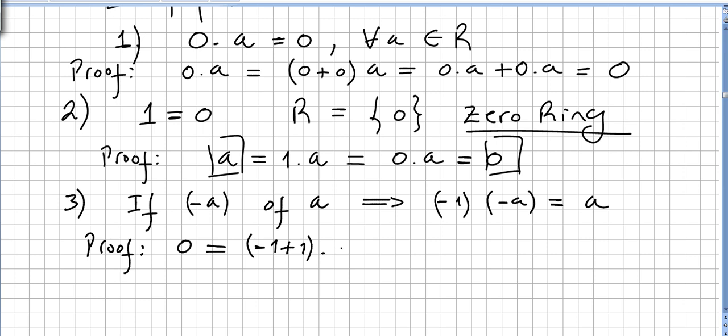So this product will be 0, right, because this is the 0 element. 0 times minus A, and we already proved that 0 times A is 0. 0 times any element is 0. So 0 times any element is 0.